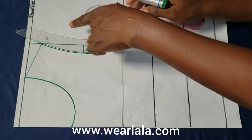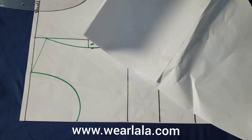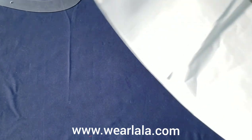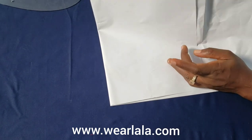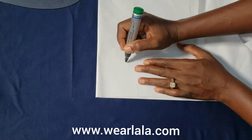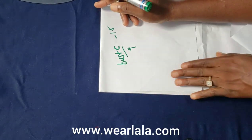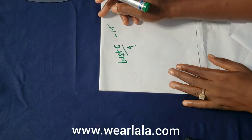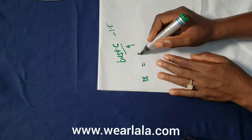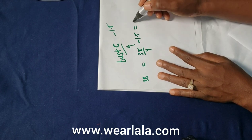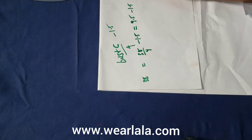Now the next tip is the bust span. The bust span helps determine the position of your darts. You cannot place darts randomly — people have different measurements. The formula is: bust circumference divided by 4, minus 1.5. This works for any size — I've been using it for 8 to 9 years. If the bust is 38: 38 divided by 4 is 9.5, minus 1.5 equals 8. So for someone with a bust circumference of 38, the bust span is 8.